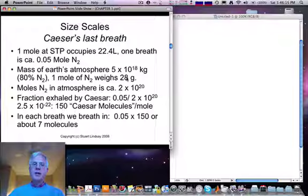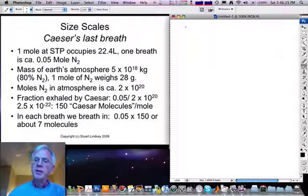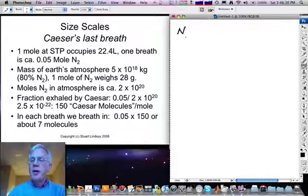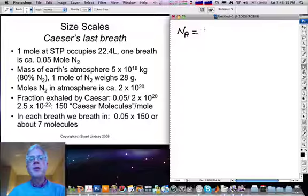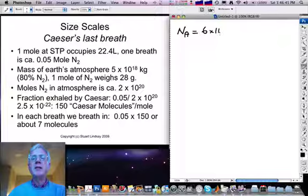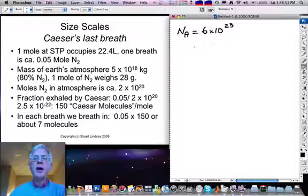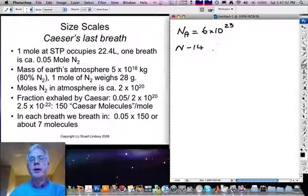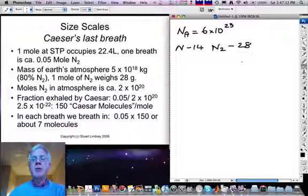All right, so let's deal with the subject of size scales. This little exercise here is to illustrate just how big Avogadro's number is. Just to remind you, Avogadro's number is the number of atoms or molecules in one gram mole of a substance. And as you probably learned in high school, that is 6 times 10 to the 23. And once again, that's the number of atoms or molecules in one gram mole. So for example, nitrogen has an atomic weight of 14. So 14 grams of nitrogen would contain Avogadro's number of nitrogen atoms. But nitrogen always comes as N2 molecules, and that has an atomic weight of 28. So 28 grams of nitrogen would contain Avogadro's number of molecules.